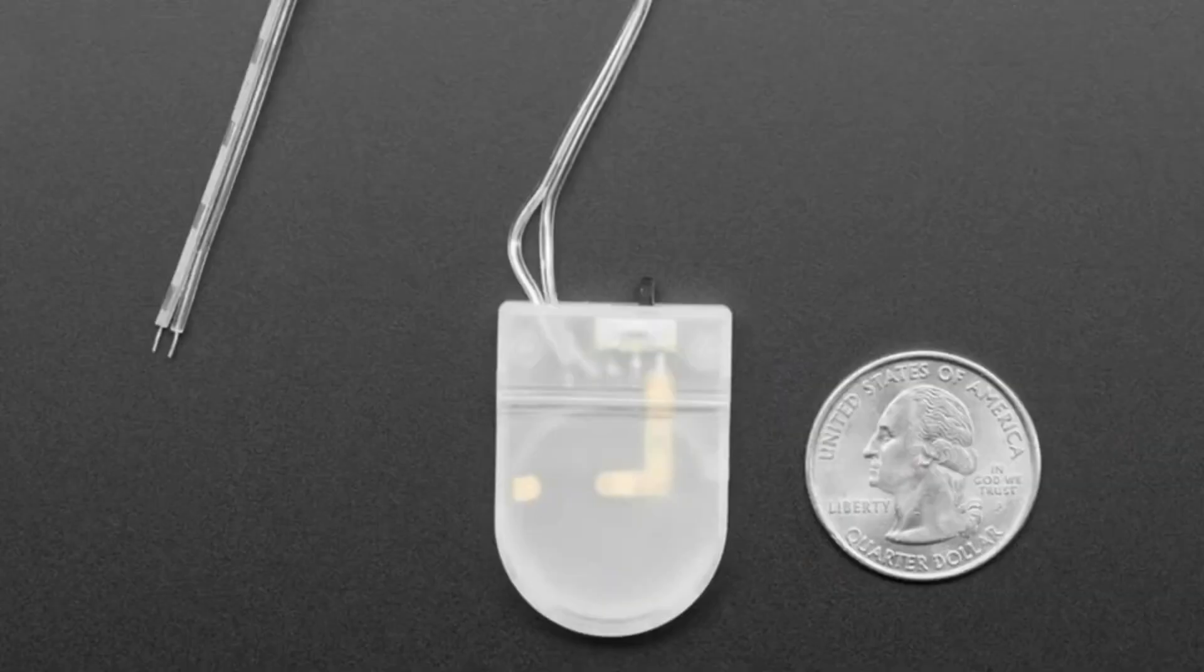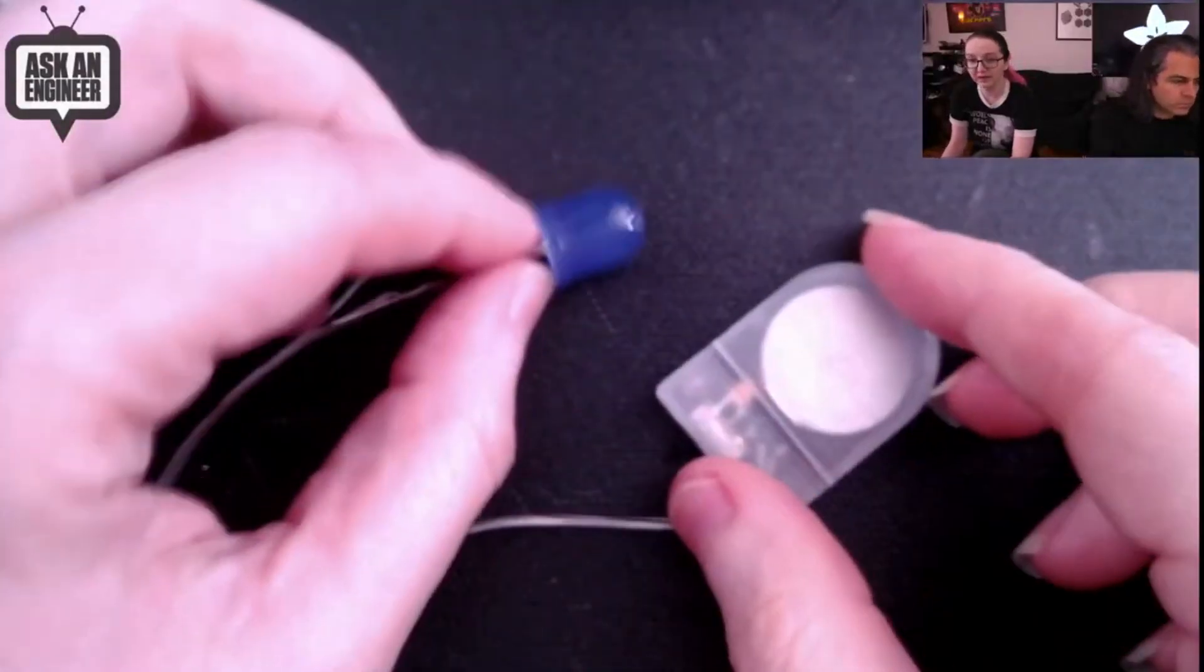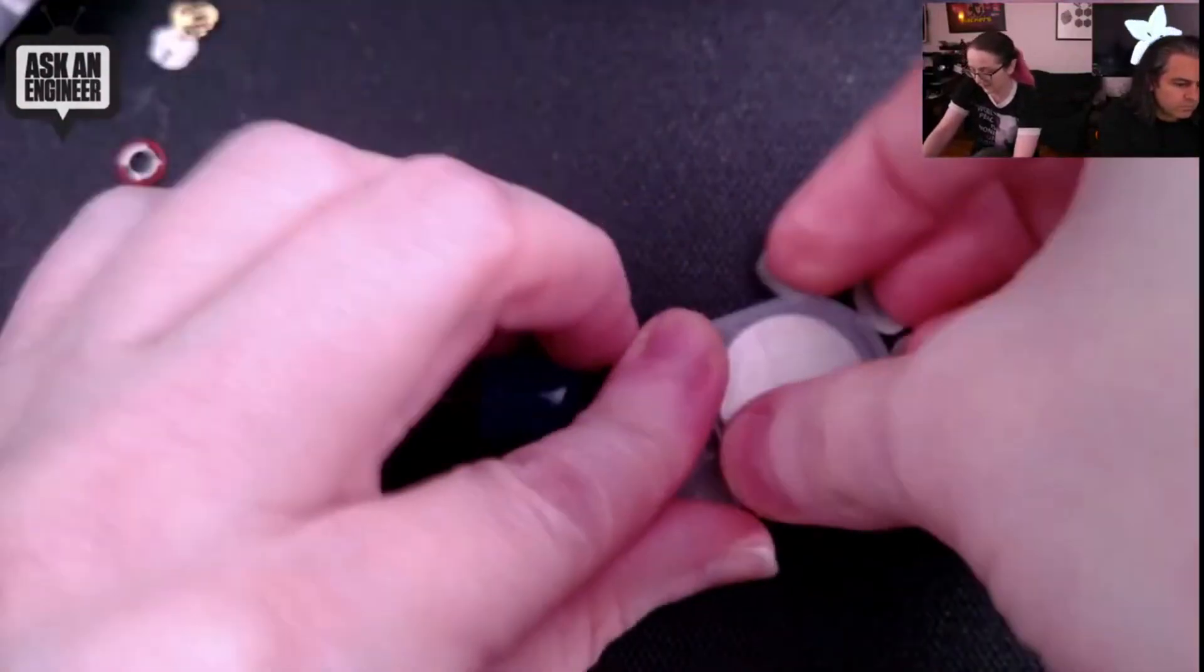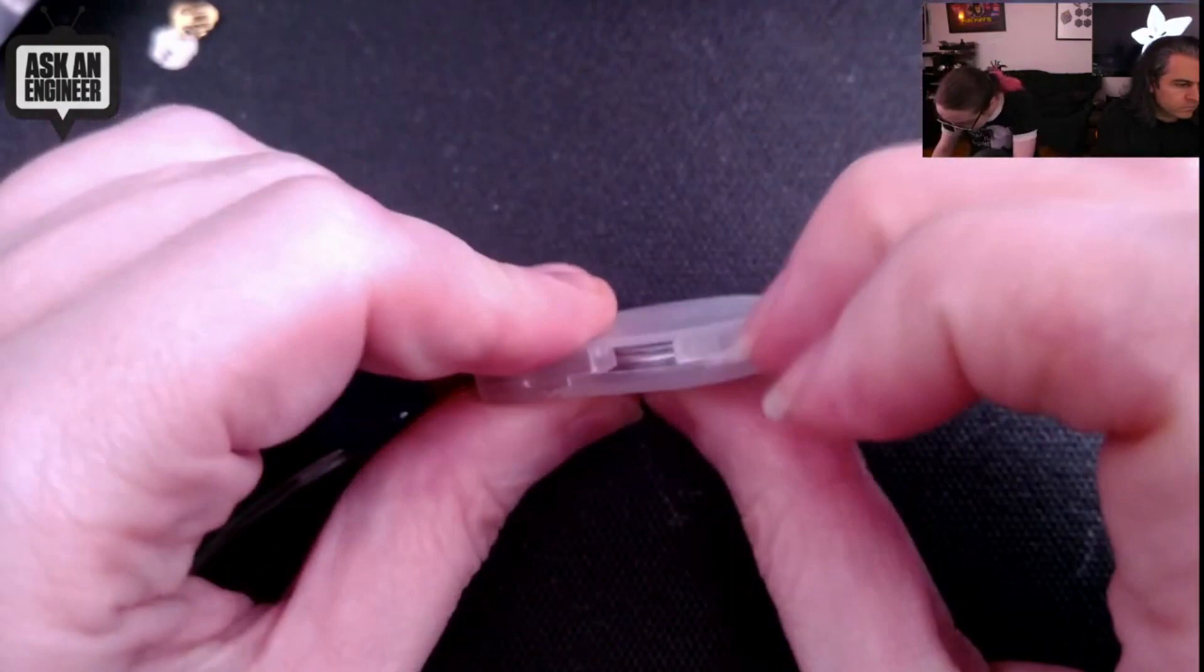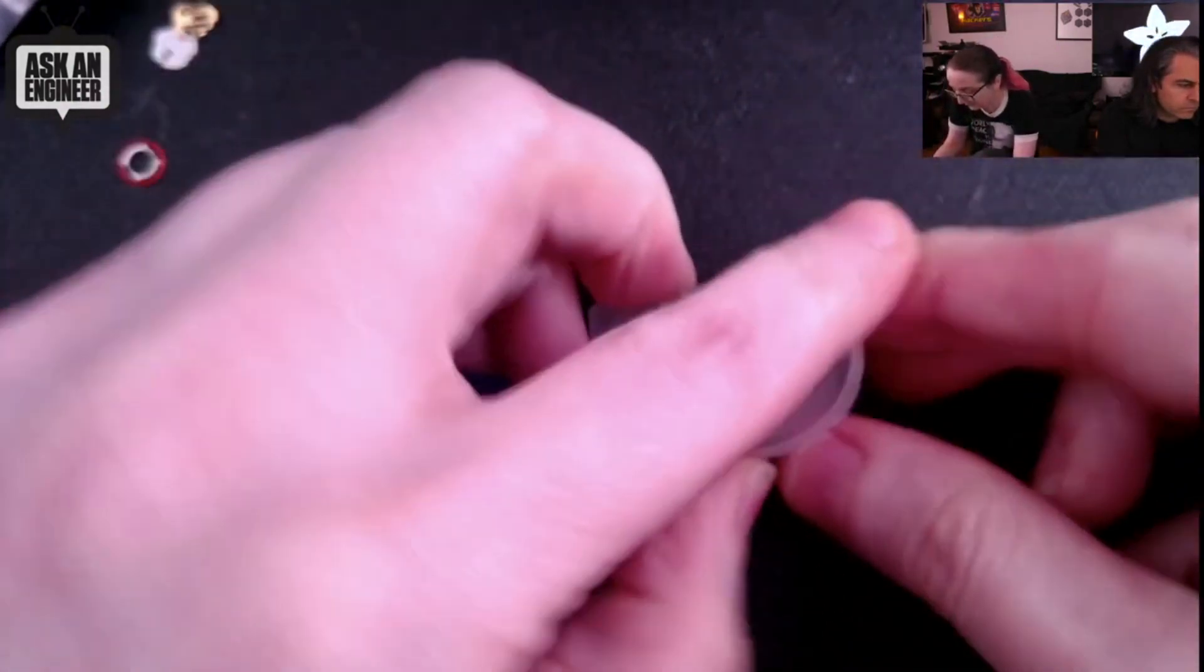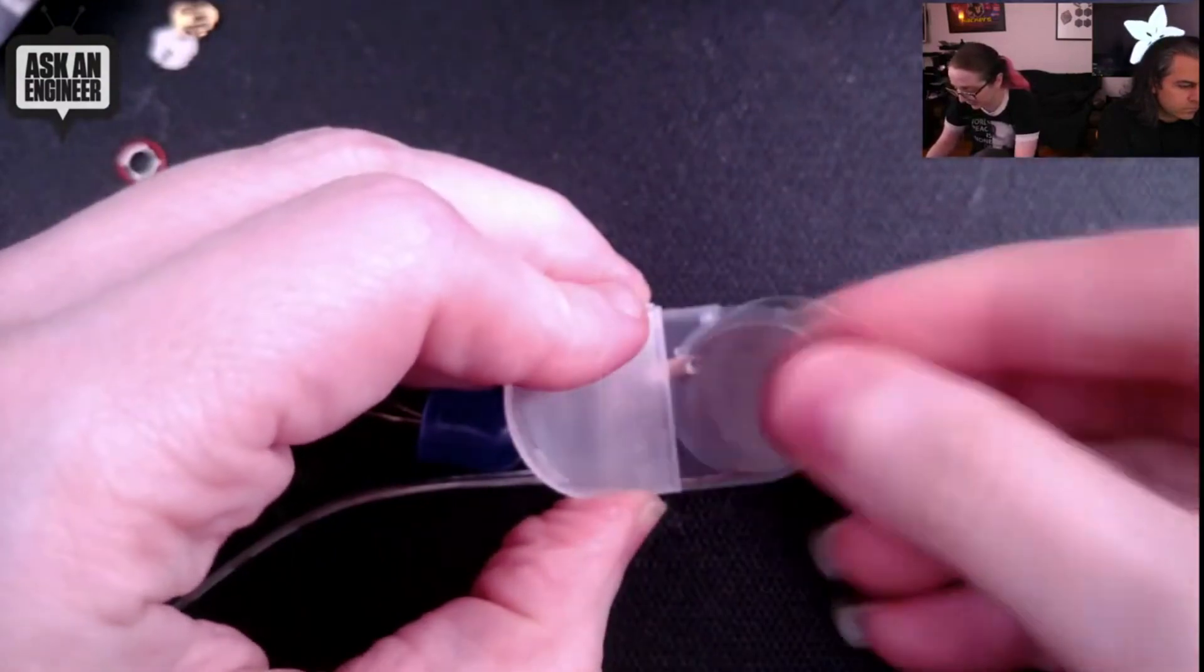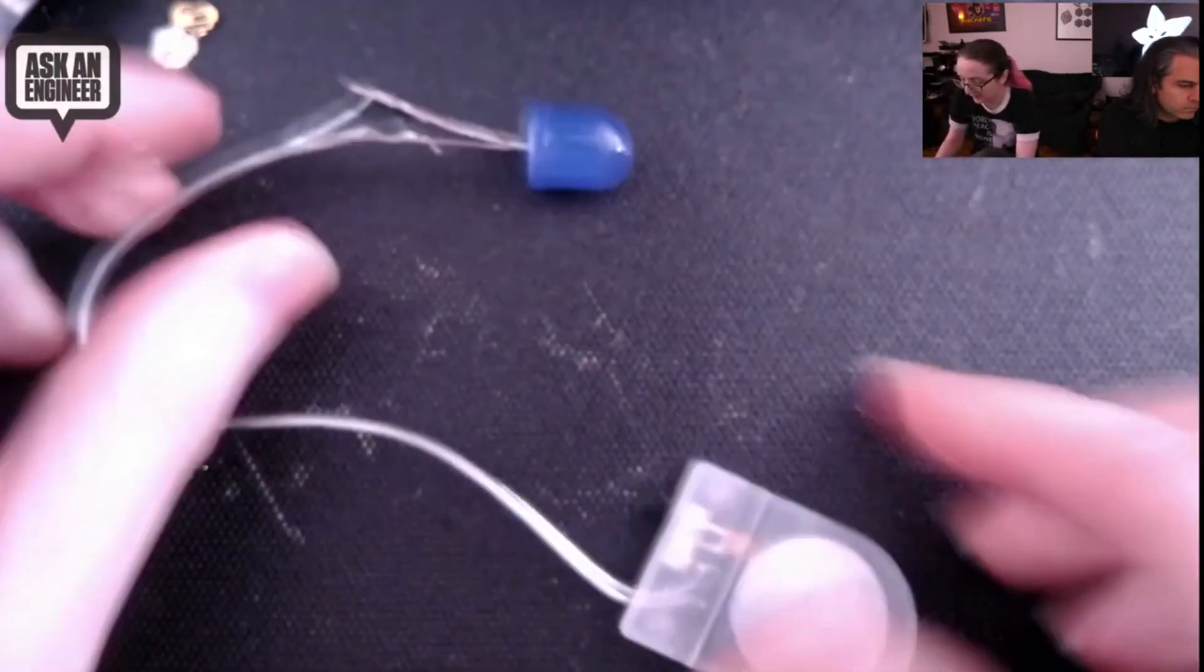And then there's an on-off switch so you can turn it on or off. I thought I could also show this real fast on the overhead. Yeah, you just, you do have to use your fingernails but this snaps open and the coin cell goes in here.